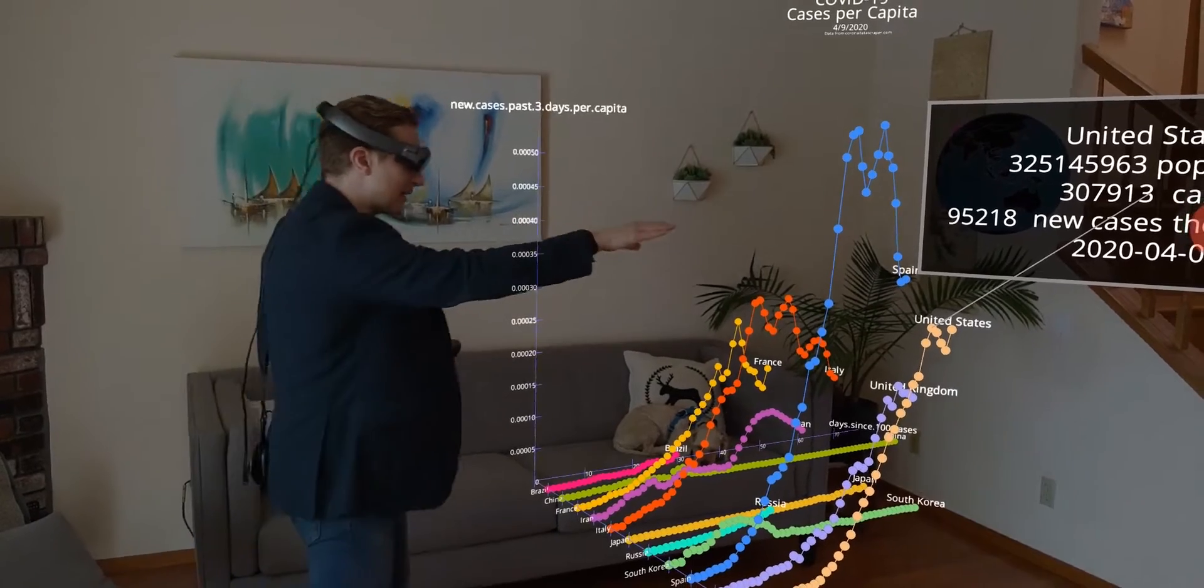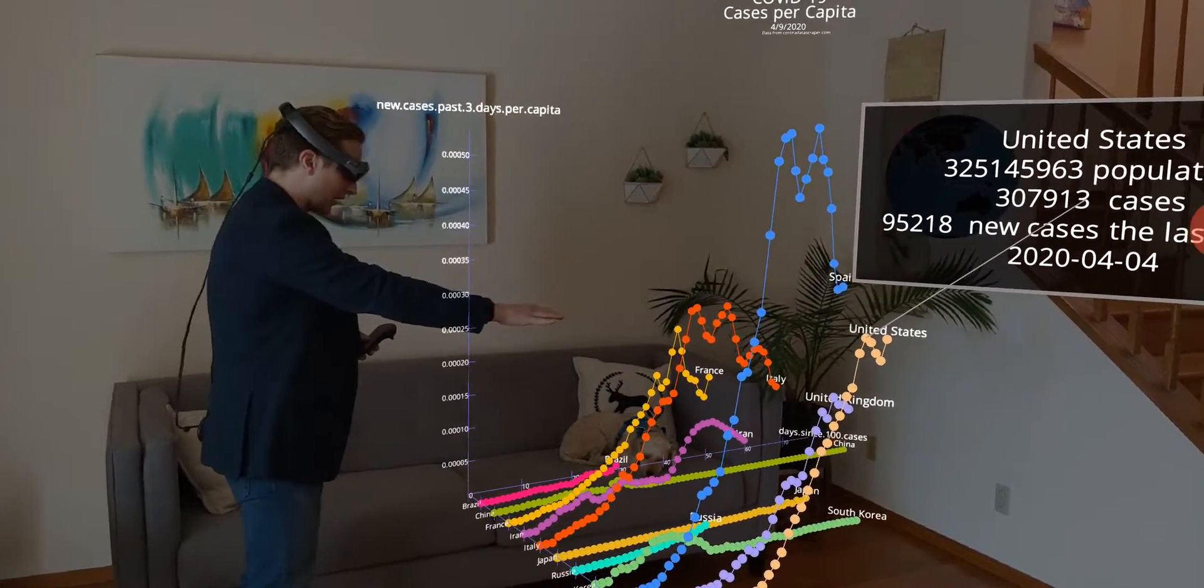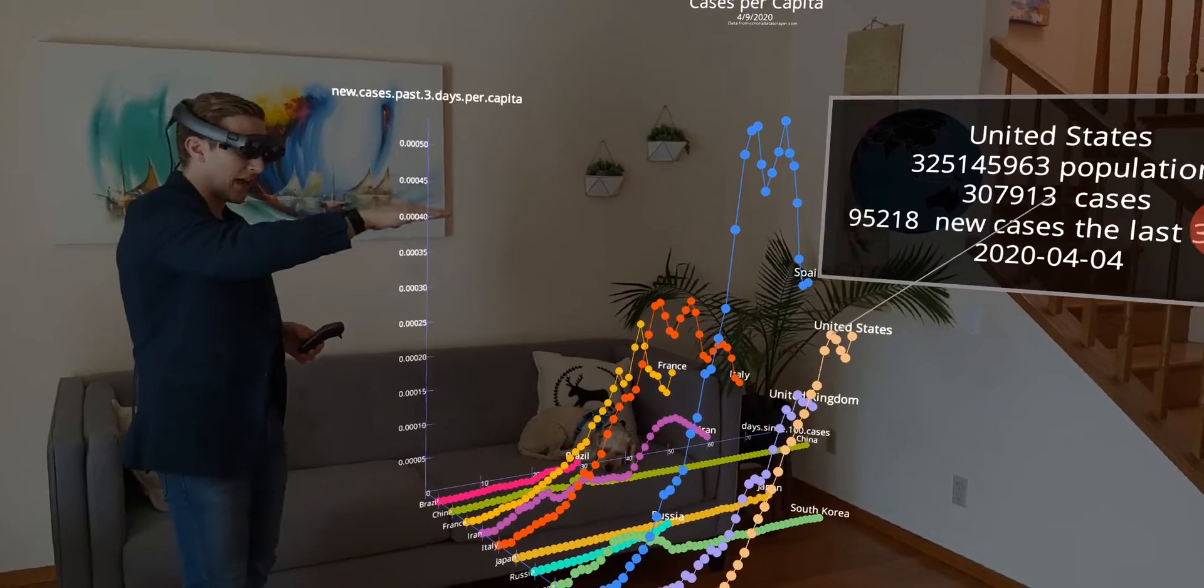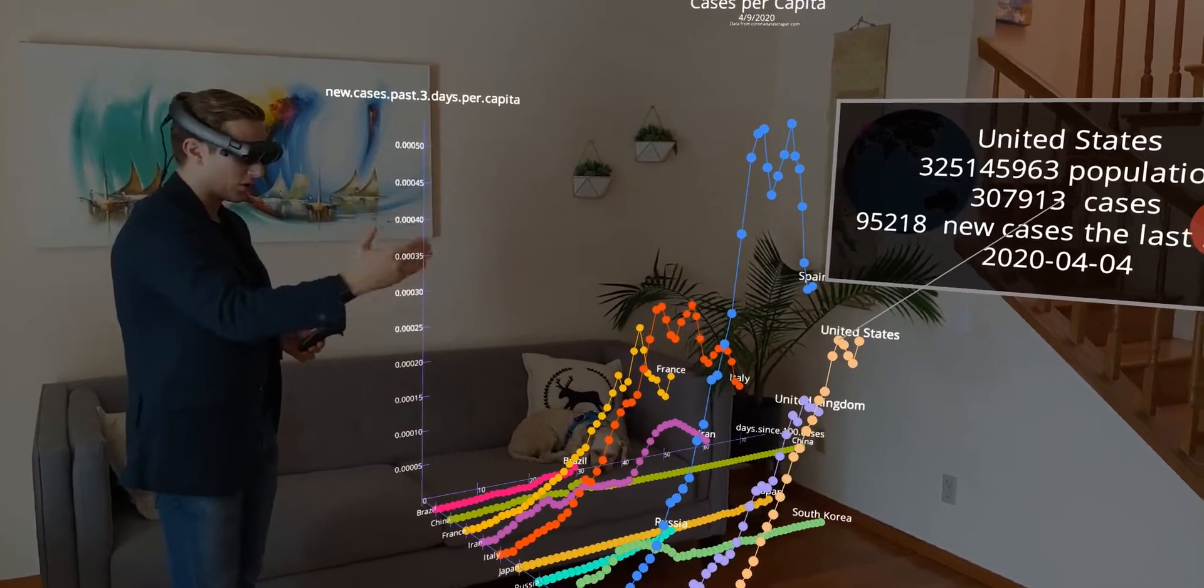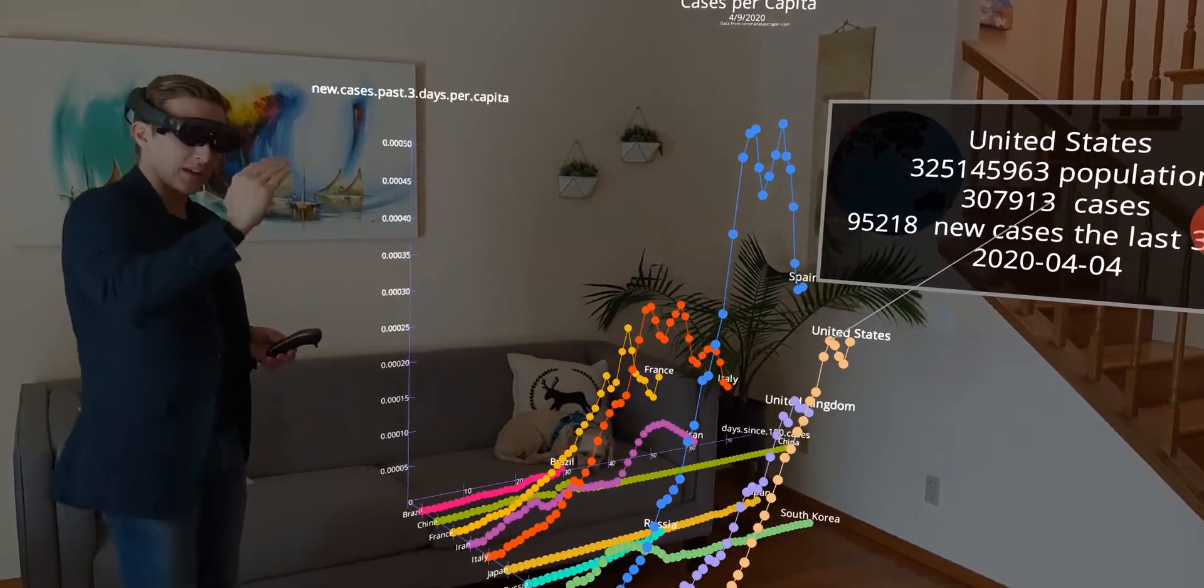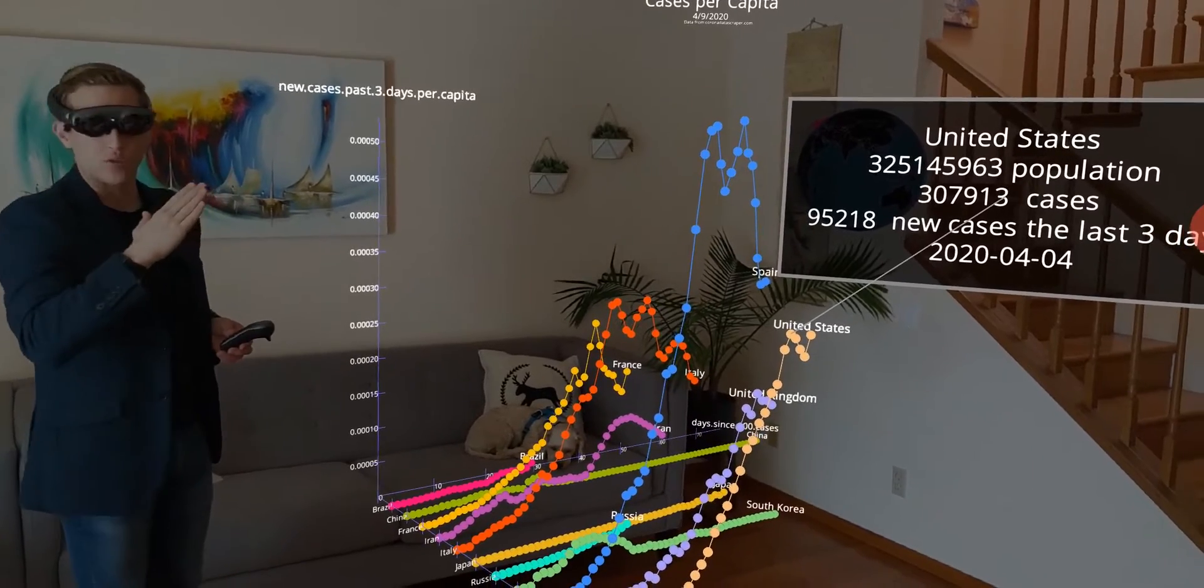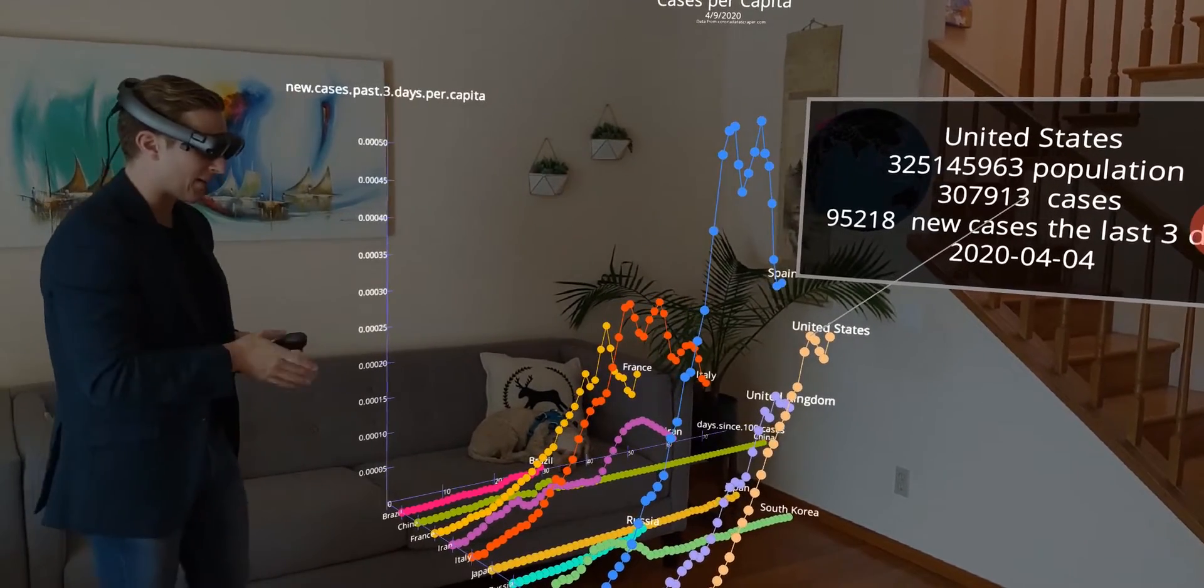But what we can start to see is, like in Spain, Italy, France, that these numbers are starting to level out, if not start to decrease, which is a very positive sign that we are getting beyond that exponential part of the curve, that we're not continuing on that exponential pattern.